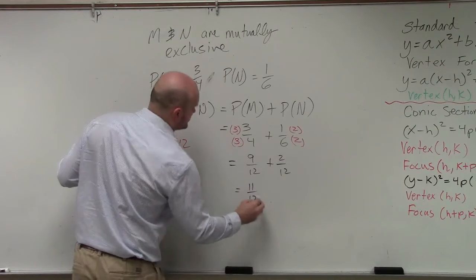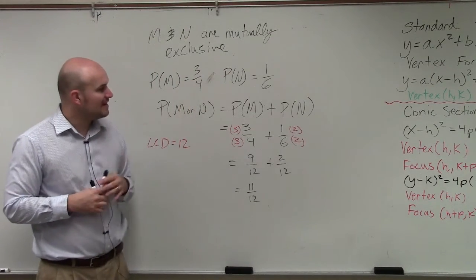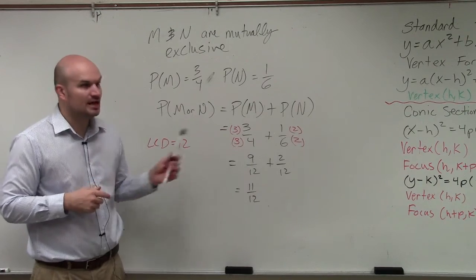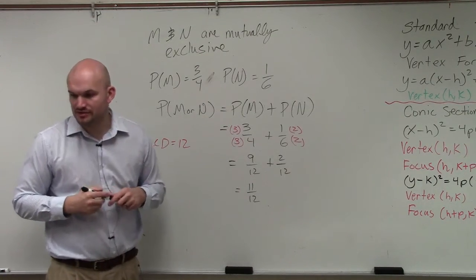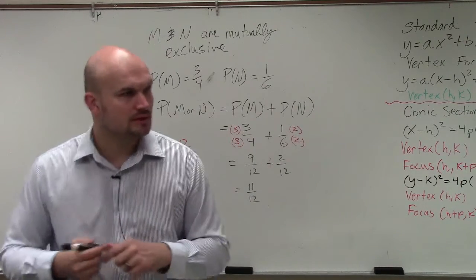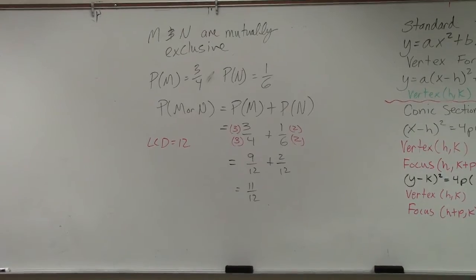Therefore, that gives us 11/12. So therefore, the probability of event M or N would be 11/12. Or you could reduce that down to a percentage as well. But that will be acceptable right there.